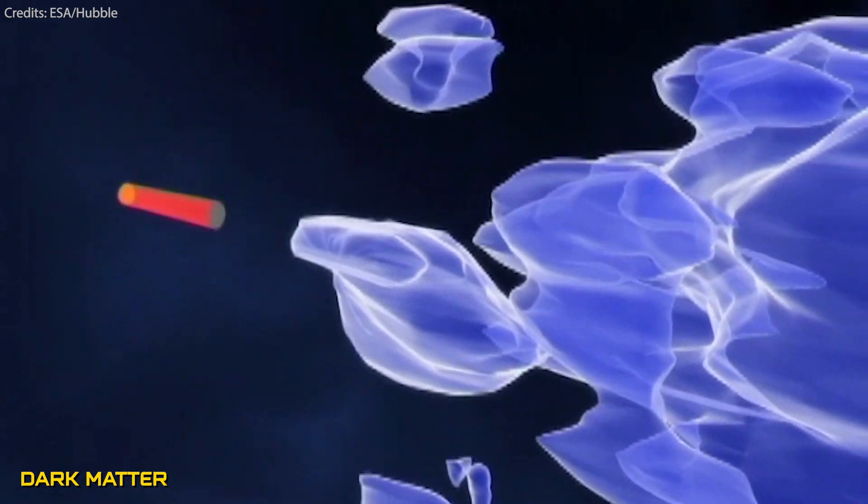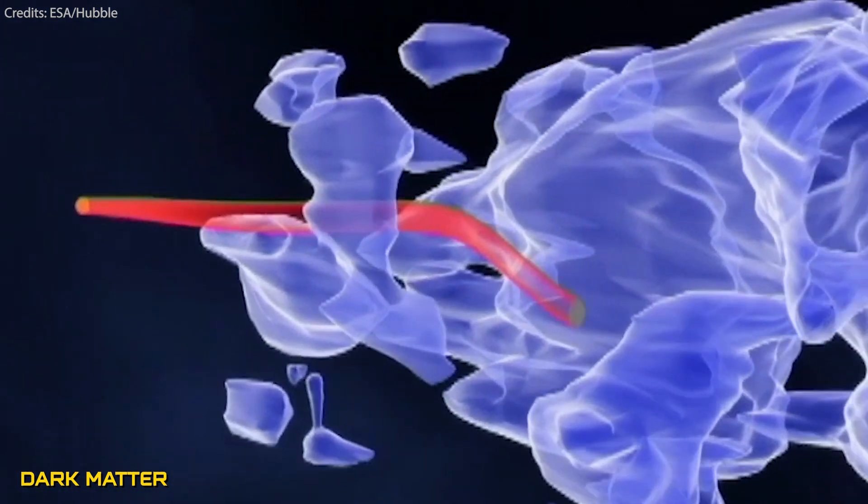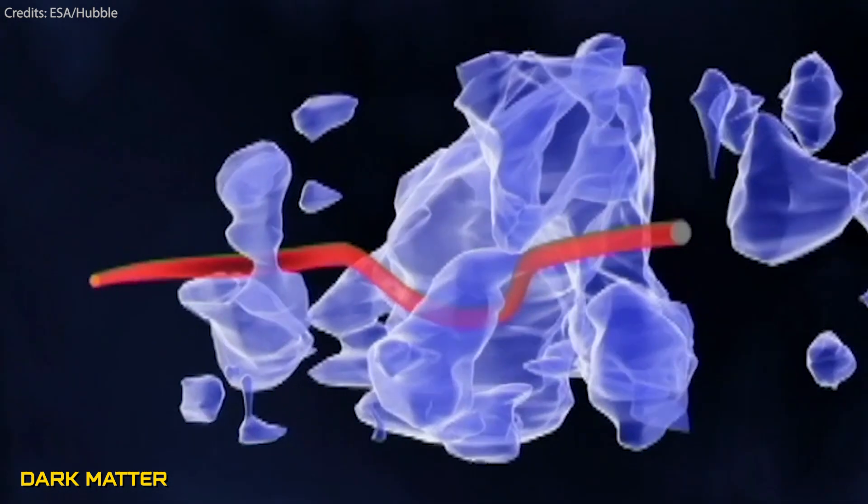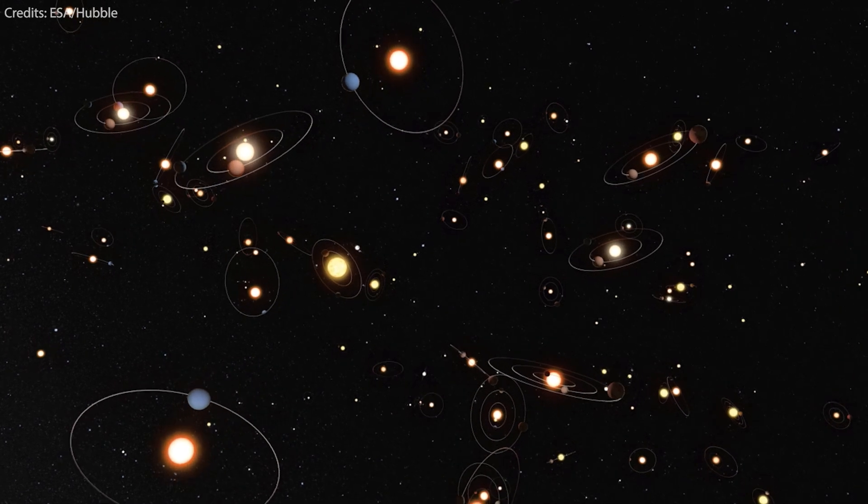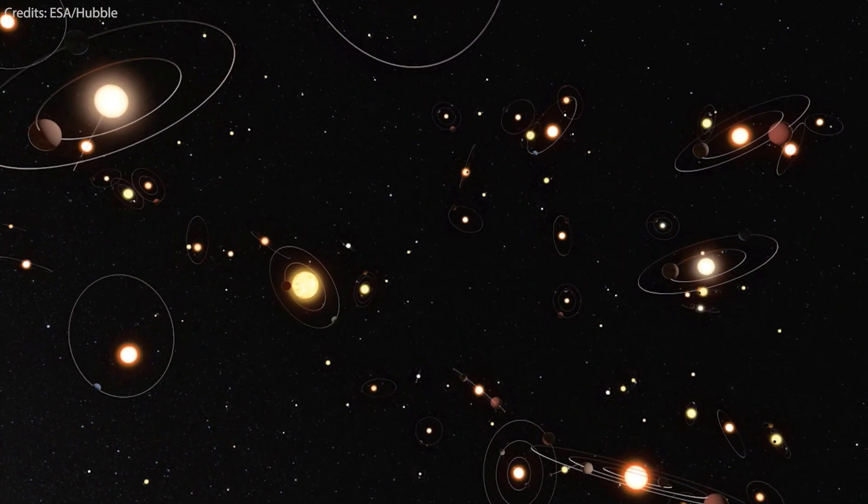Meanwhile, dark matter exerts its gravitational influence, shaping the movements of visible matter within galactic structures. Together, these enigmatic forces govern the evolution of the cosmos, guiding the trajectories of stars and galaxies through the vast expanse of space.